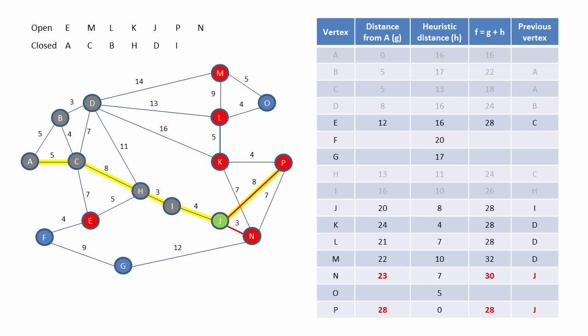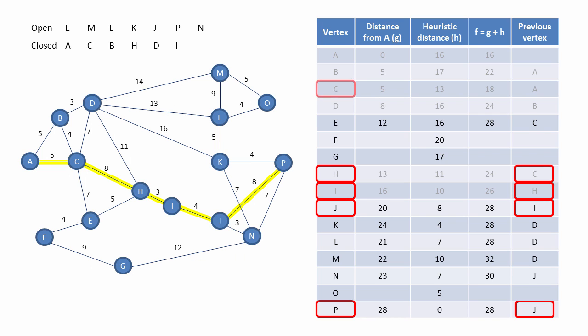The G value of P gives us the path distance we're looking for. And since every vertex has a record of the vertex that came before it, we can now trace these backwards to get the path sequence that we've been looking for. For example, we got to P via J. We got to J via I. We got to I via H, and to H via C. We got to C via A. That's our path.